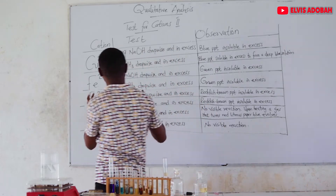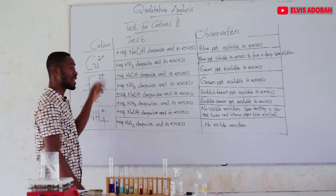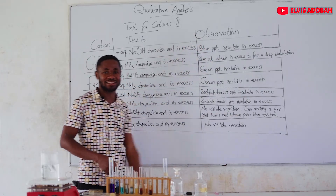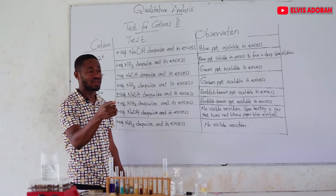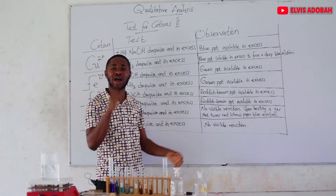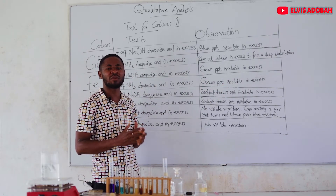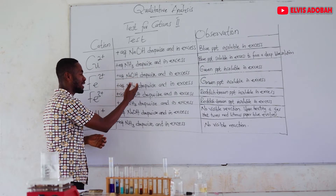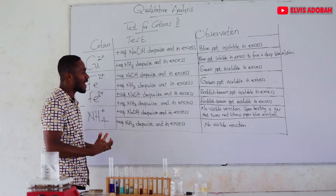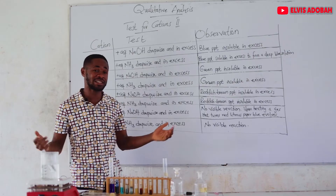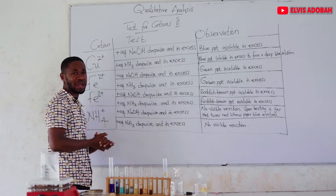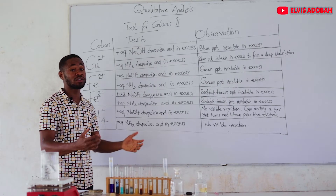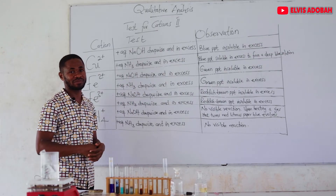So with these four cations, always remember copper is blue. Copper with aqueous sodium hydroxide gives a blue precipitate, insoluble in excess. Even with aqueous ammonia you still get a blue precipitate; however, this precipitate is soluble and forms a very deep blue solution. With Fe2+, both sodium hydroxide and ammonia solution give the same green precipitate, insoluble in excess. The same applies to Fe3+: with sodium hydroxide and aqueous ammonia, we get reddish brown precipitate, insoluble in excess in each case.